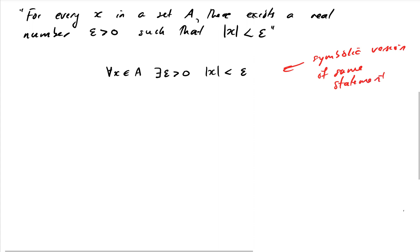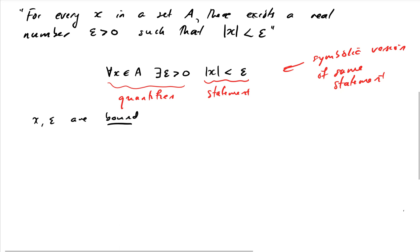Notice that in the actual statement part, the quantifiers tell us where x and epsilon come from and what range of values we're expected to deal with. These variables are called bound variables because they have quantifiers attached to them.